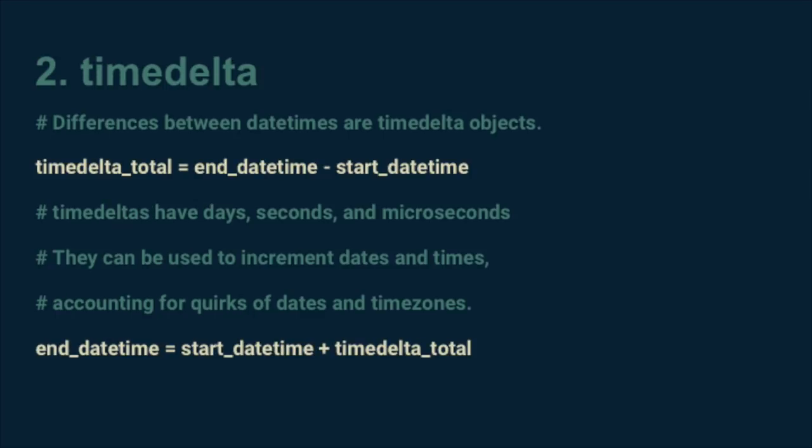Our second trick for using DateTimes is a type called TimeDelta. This represents the difference between two DateTimes. A TimeDelta has just three values: days, seconds, and microseconds. It turns out that the difference between any two DateTimes can be uniquely represented in this way. TimeDelta's are incredibly useful because they allow us to do simple addition and subtraction arithmetic on DateTimes. They remove the need to think about things like how many days are in a month, and how many seconds are in a day, and leap years.